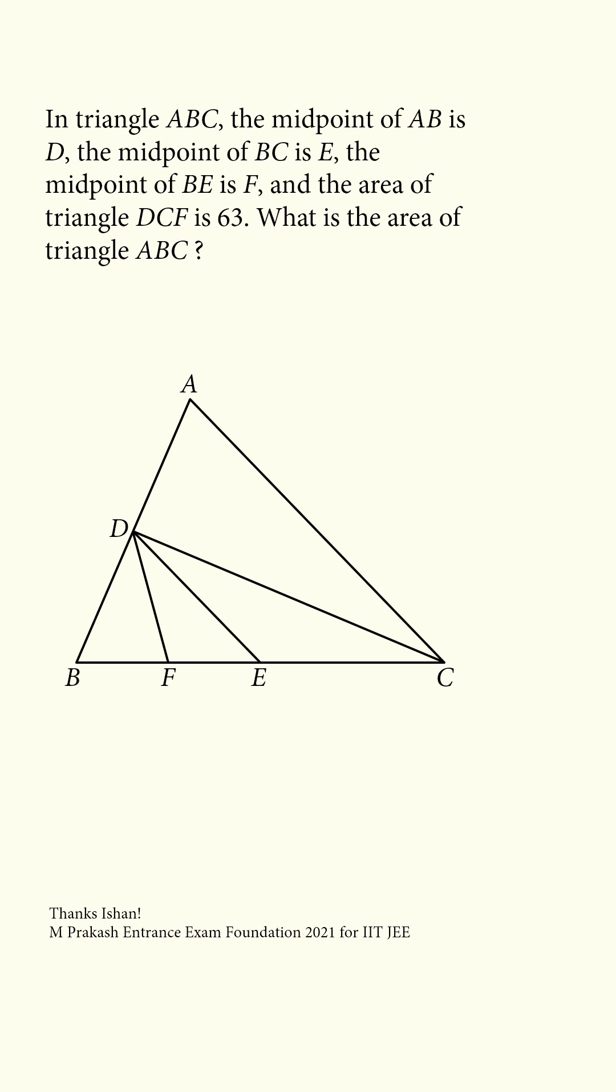Here's a fun geometry problem. In triangle ABC, the midpoint of AB is D, the midpoint of BC is E, the midpoint of BE is F, and the area of triangle DCF is 63. What is the area of triangle ABC?